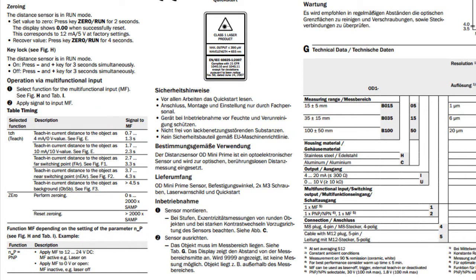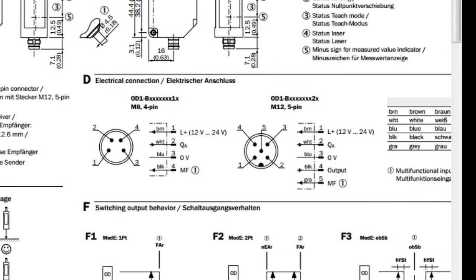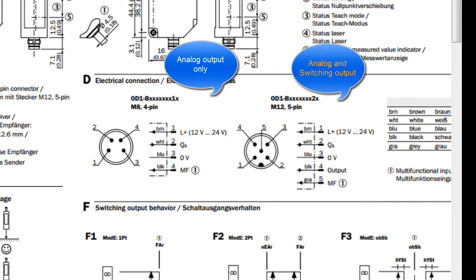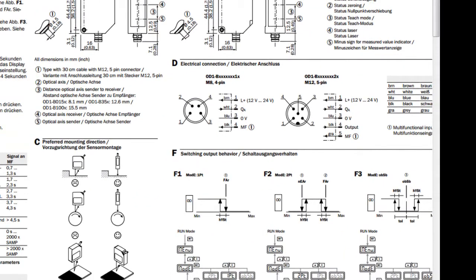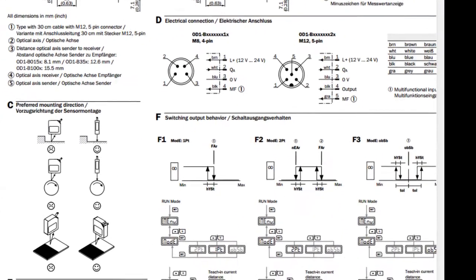For now, we're going to stick with using the display and the keypad. Some OD Minis have an analog output only. Some have an analog output and a switching output. So we're going to take a look at setting this up with a model that has an analog output and a switching output.